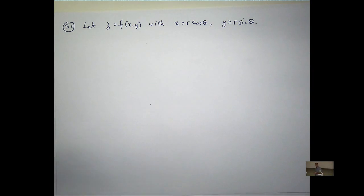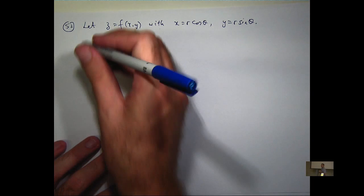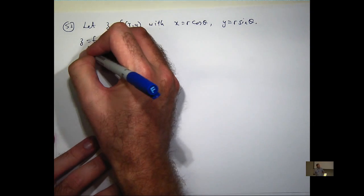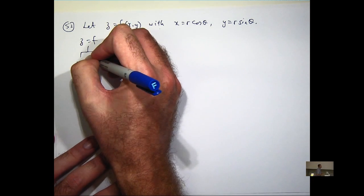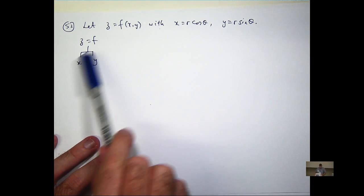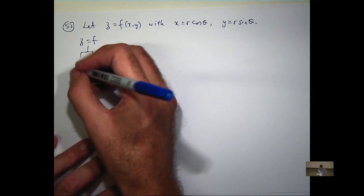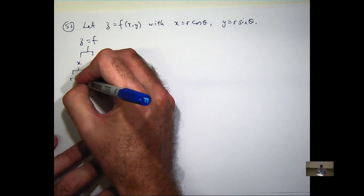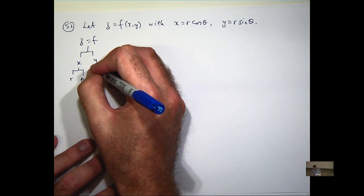So to get the second order partials, let's do the first order partials. Drawing our little nifty diagram. We know that f depends on two variables and each of those variables depend on two things.